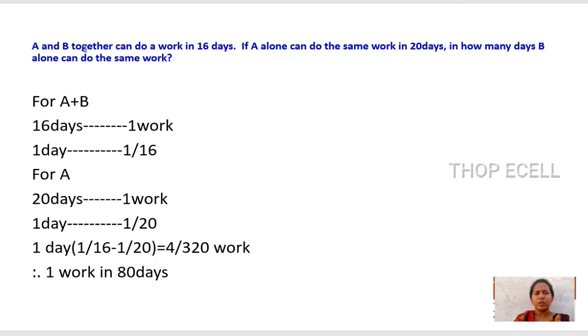A and B together can do work in 16 days. By unitary method, 16 days equals one work, so in one day 1/16 work is done. For A, 15 days equals one work, so 1 day equals 1/15 work per day. For B, 10 days equals one work, so 1 day equals 1/10 work per day. By subtracting, 1/16 minus 1/20 equals 4/320. The work that can be done by B is 80 days.